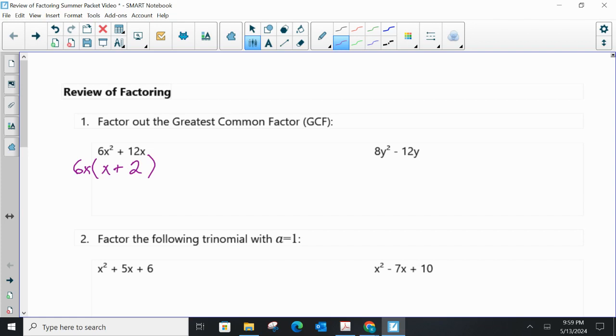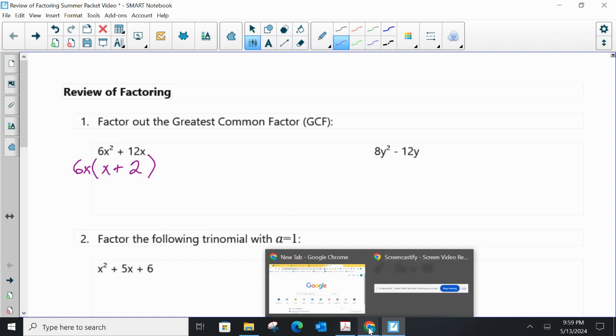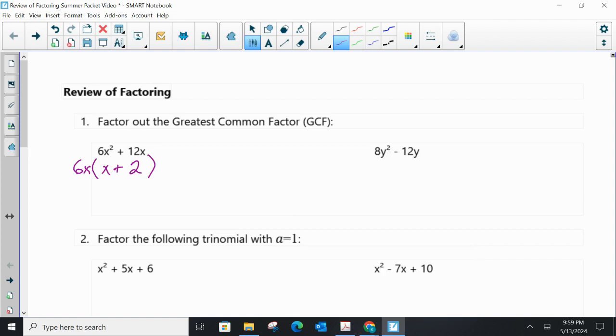Now if you wanted to check your work, you could multiply this back. You could distribute the 6x over the x and the 2, and you would get 6x² + 12x, so you would know you were correct. Go ahead and take a look at the next problem, the one over to the right, 8y² - 12y. Pause the video and go ahead and try it. So now you can see the answer to that one. Let's go ahead and go to problem number 2.